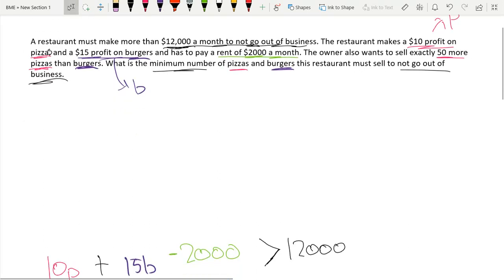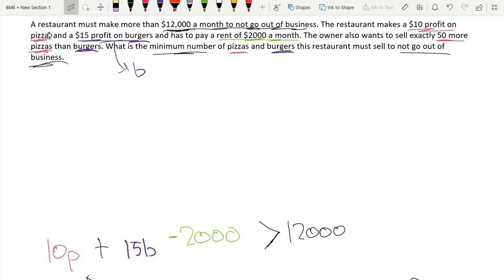So we can make our first equation of 10P. Because we make a $10 profit on pizza plus $15 profit on burgers minus the $2,000 because we have to spend this on our rent must be greater than $12,000 because we need that to not go out of business.